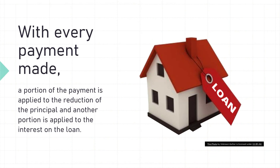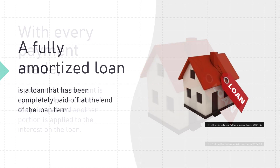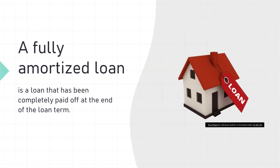With every payment made, a portion of the payment is applied to the reduction of the principal and another portion is applied to the interest on the loan. A fully amortized loan is a loan that has been completely paid off at the end of the loan term.